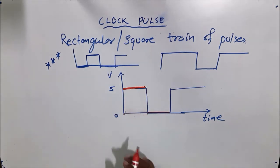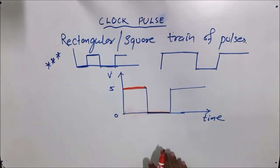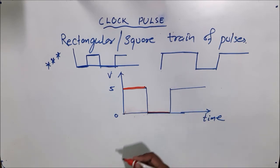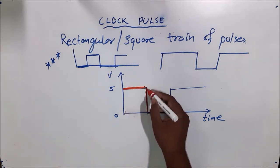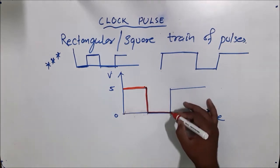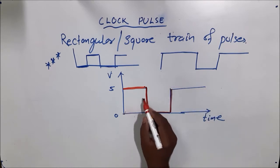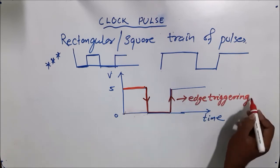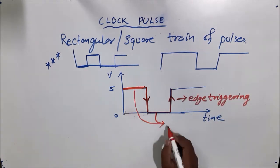There are some digital circuits which actually respond with respect to level triggering. That means when the input pulse reaches the high level, the state actually changes — when the input pulse takes that position, the output state changes. That is called level triggering.